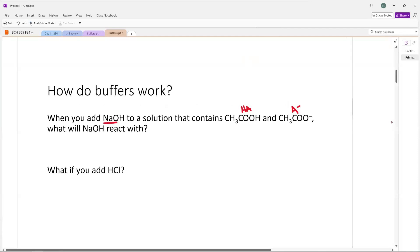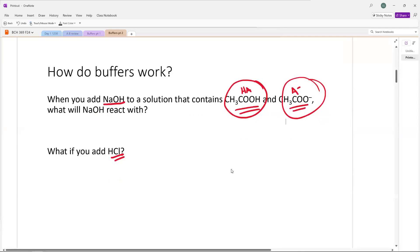So we've got a buffer solution, and we add some sodium hydroxide. That sodium hydroxide is going to pick the acid to react with, and we'll have a neutralization reaction. That acid will neutralize the sodium hydroxide. Or if we look at adding hydrochloric acid, it's going to react with the base. So buffer solutions have both an acid and a base available to neutralize. No matter what we have, there's something there to neutralize it.